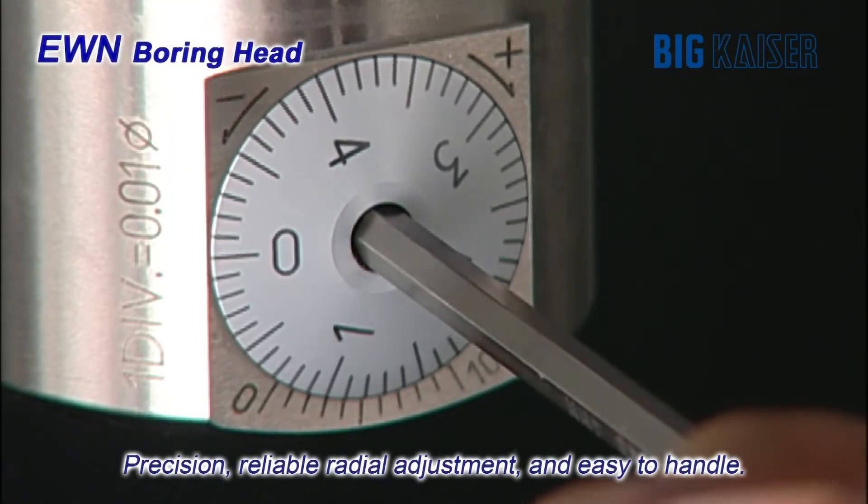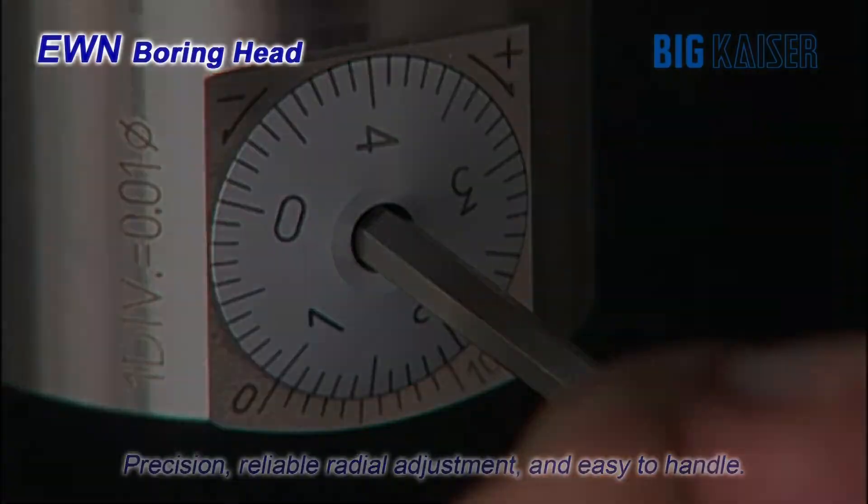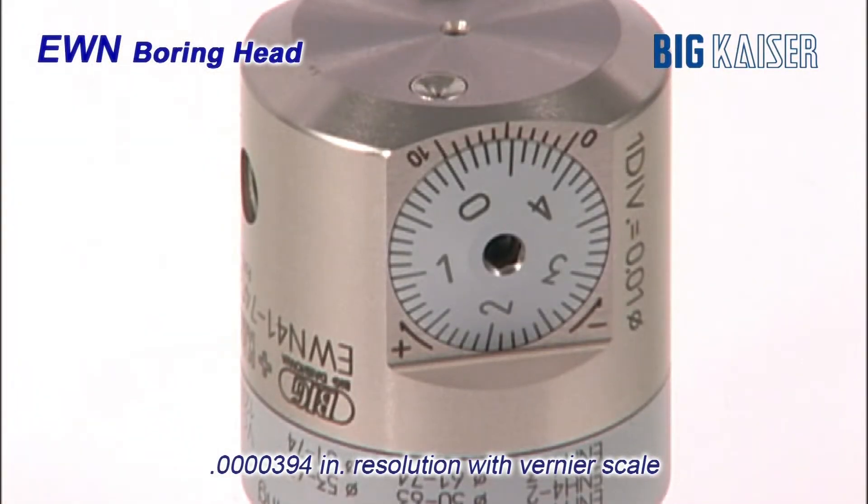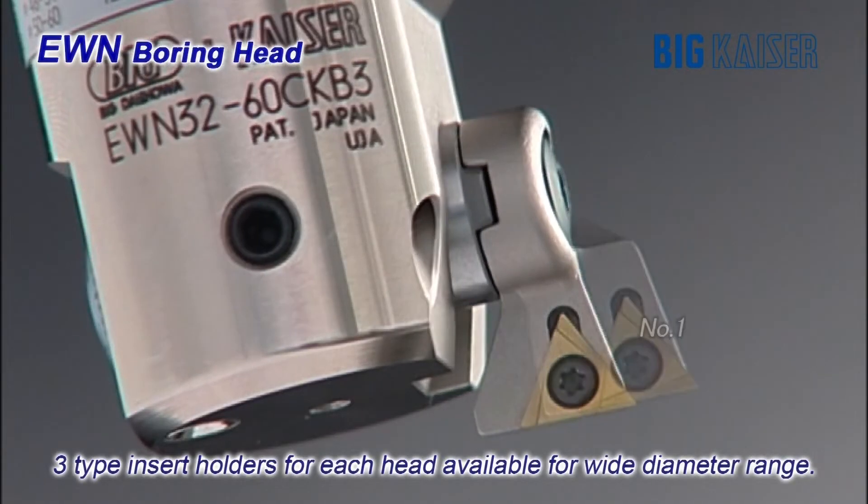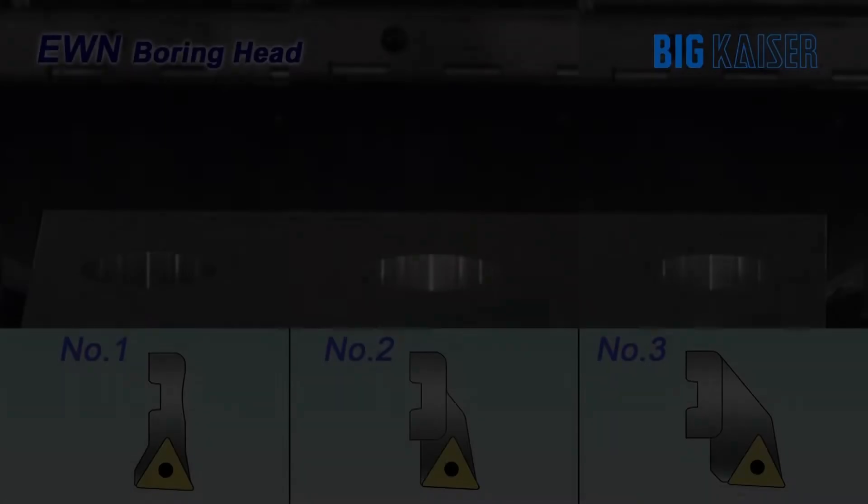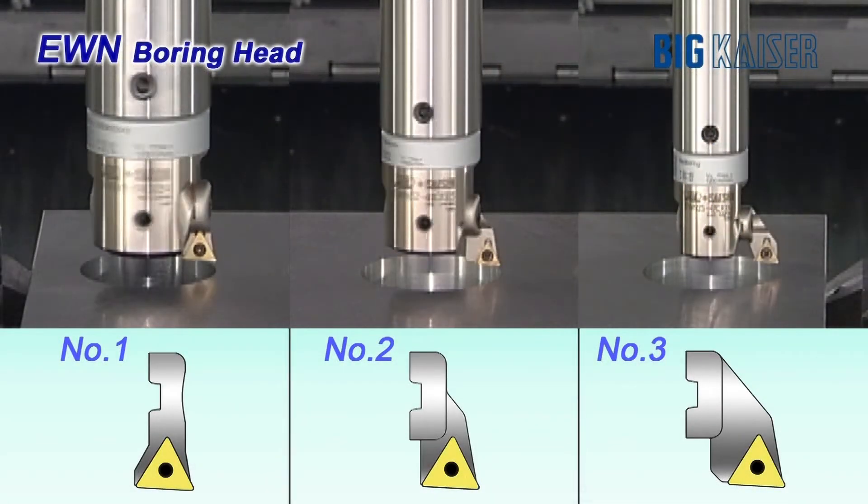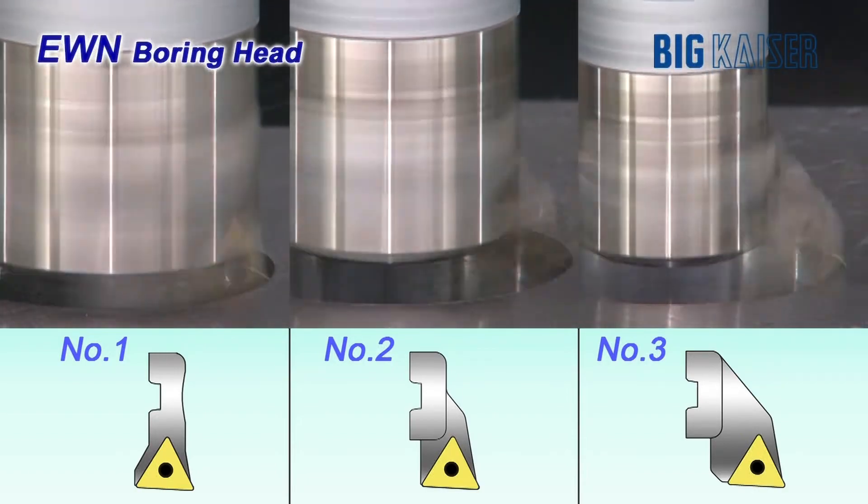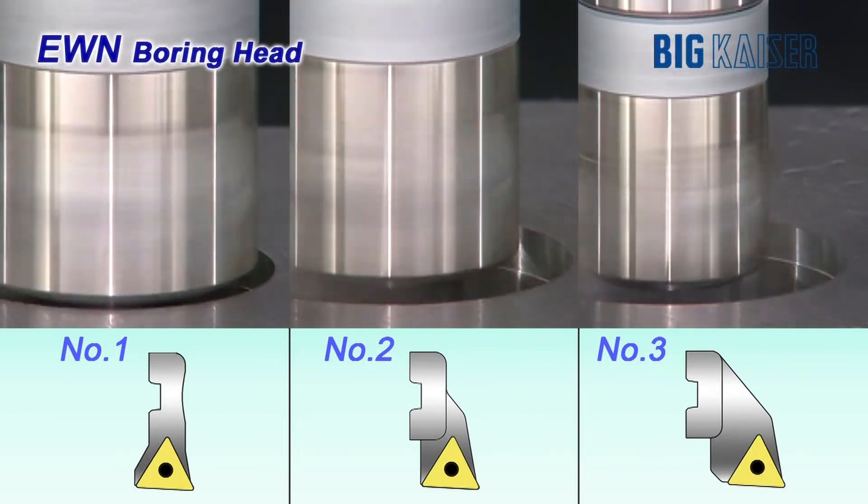A single wrench is used to attach the insert holder and to adjust and lock the cutting diameter. Vernier markings around the adjustment dial allow for precision diameter adjustments of one micron. Versatility is achieved through the use of three insert holder sizes for each head. The overlap of the system allows the same finished boring application be achieved by three different boring head insert holder combinations.